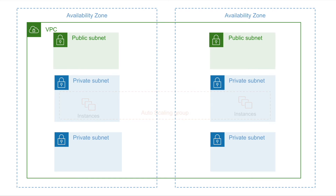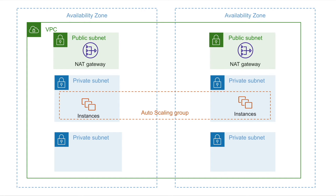Let's see that. The autoscaling servers are in the app layer, which will not have internet access initially. So we need to use a NAT gateway, which will be placed in the public subnet. We will route the traffic to the internet via this NAT gateway. But to make the NAT gateway work, we also need to deploy an internet gateway, which will route the traffic to the internet. Using the internet gateway, the NAT gateway will be able to communicate with the internet, and the load balancer will also be able to serve requests over the internet.